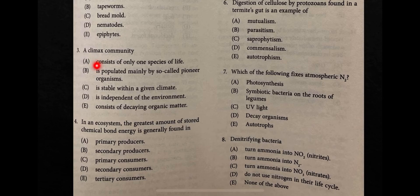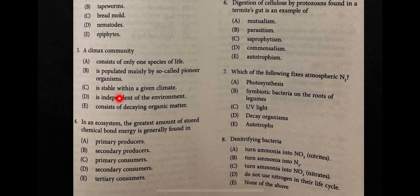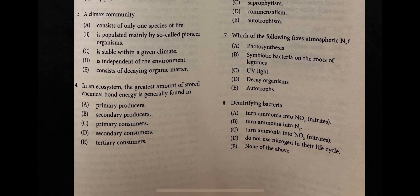Question number three concerns climax community. A climax community means a well-adapted community in a certain environment. The answer is C: stable within a given climate. It is stable because this community is well adapted to its climate.